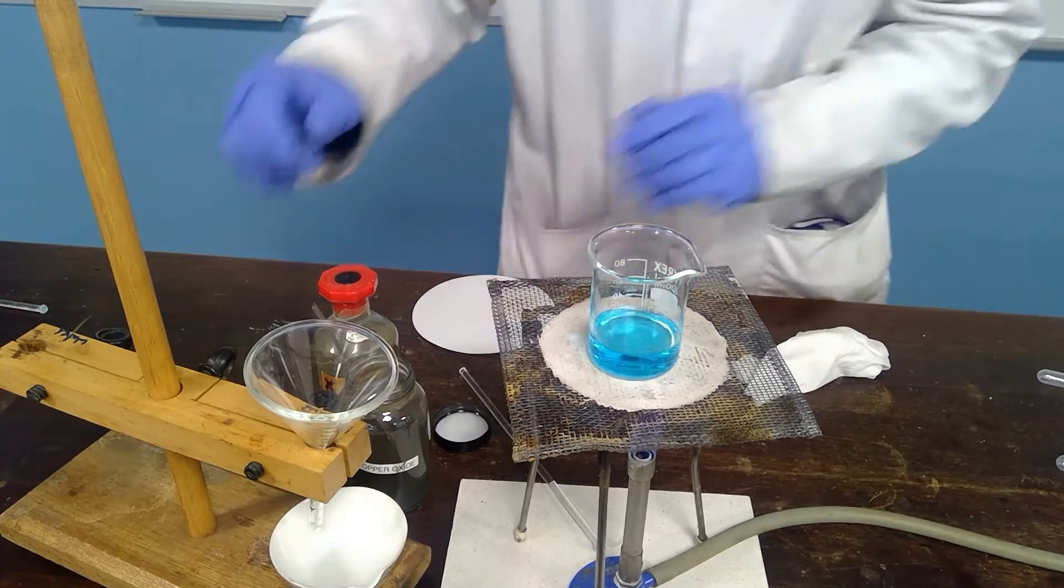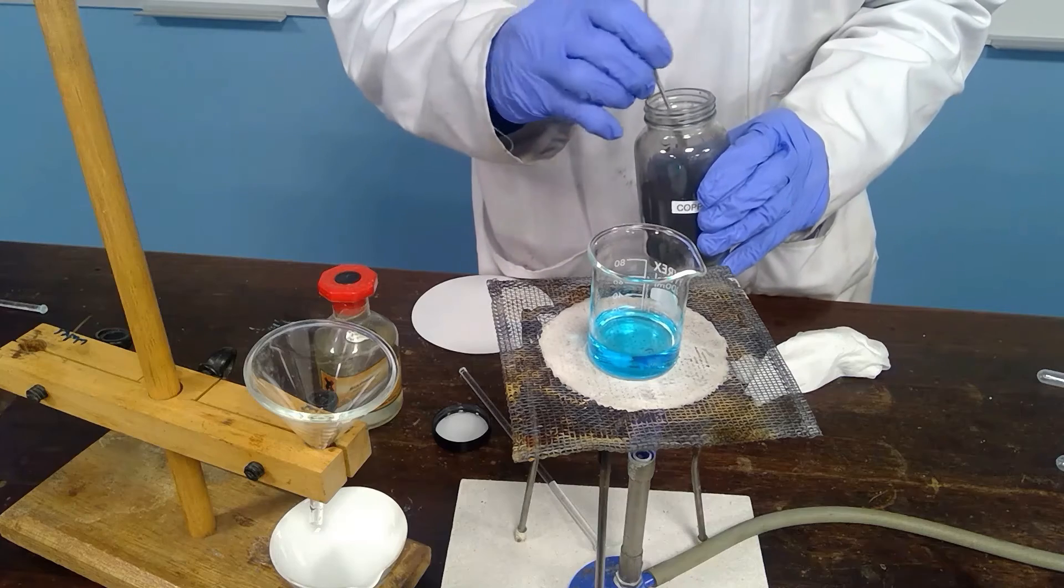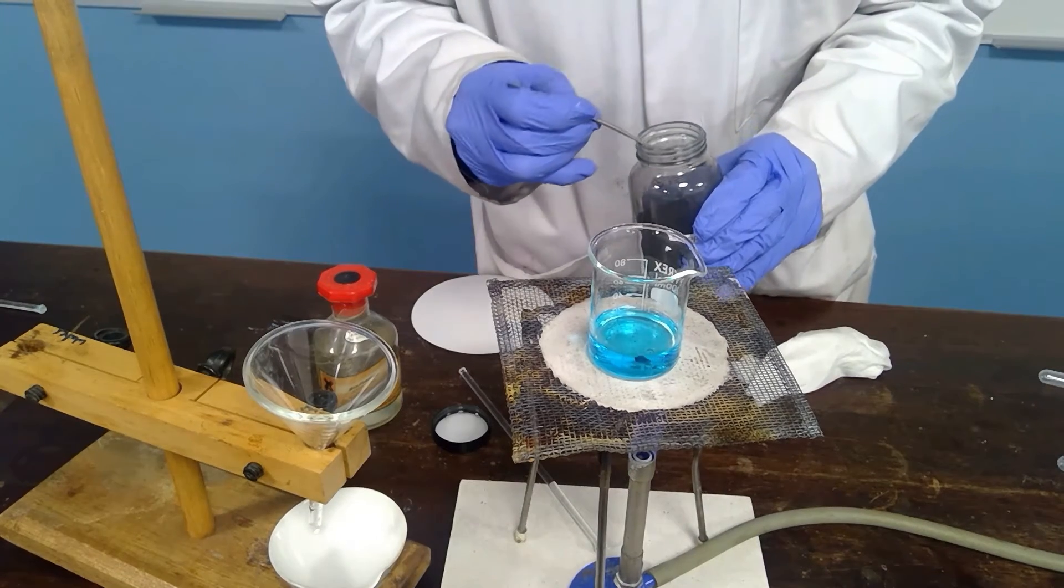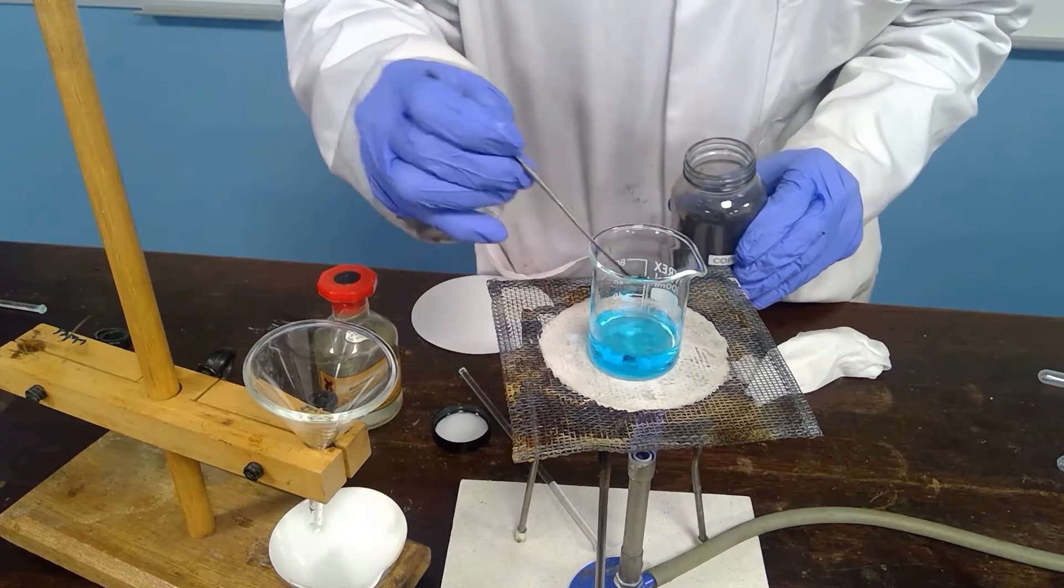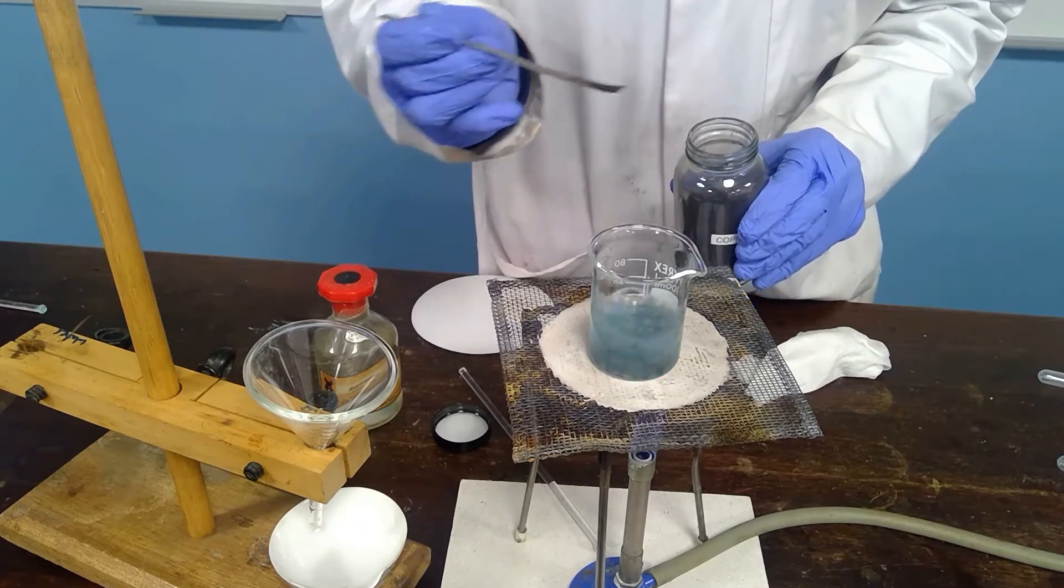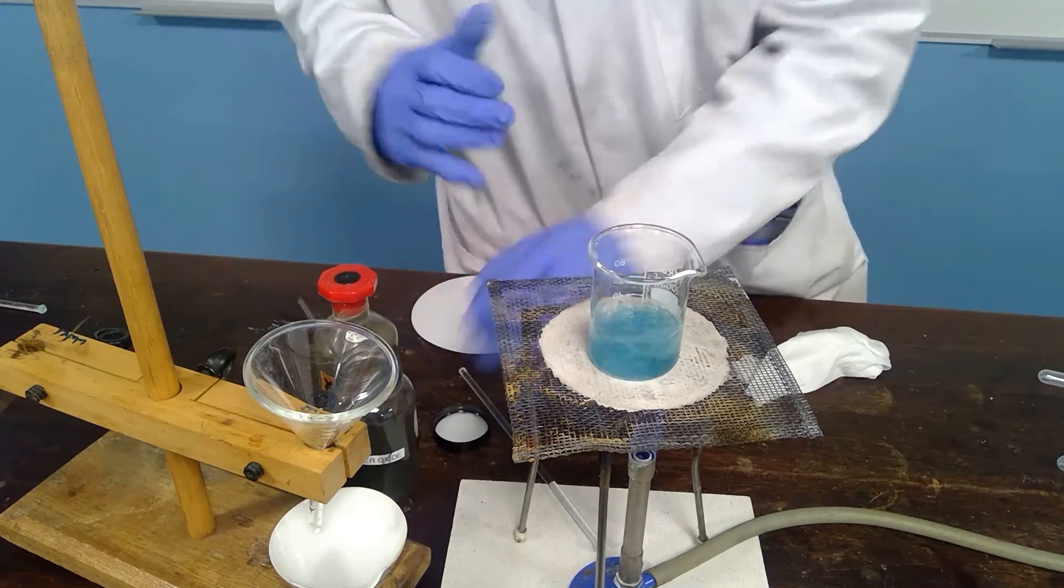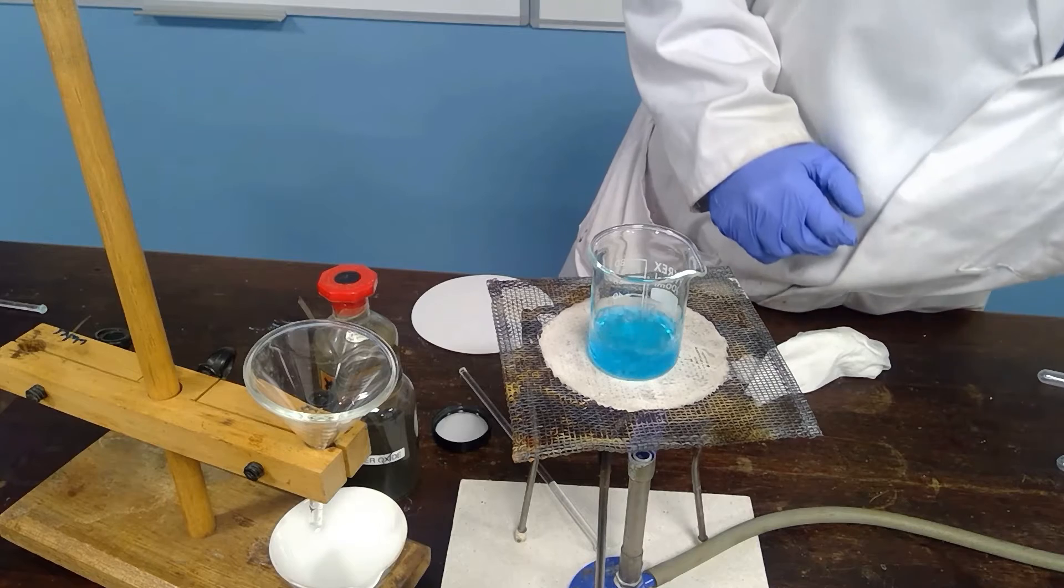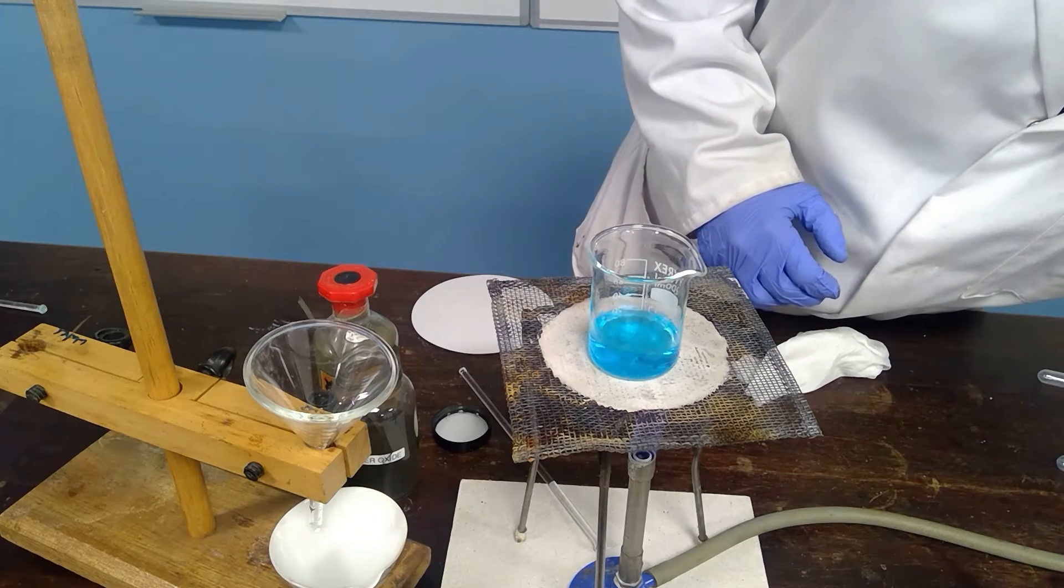So the process of adding the copper oxide is to neutralize the sulfuric acid and to make the copper sulfate. So at this point the reaction is almost instantaneous at this temperature so we will just turn the heating down a little bit more.